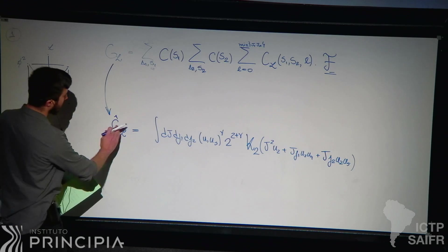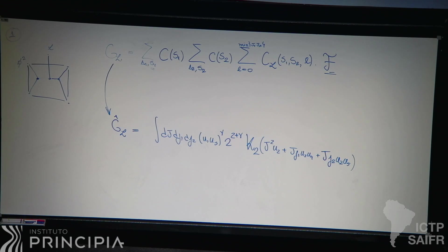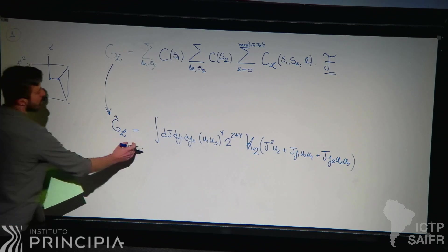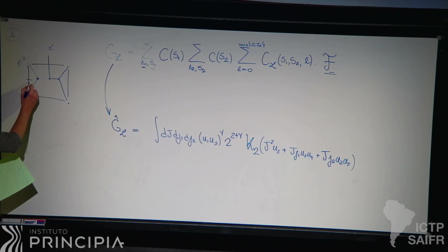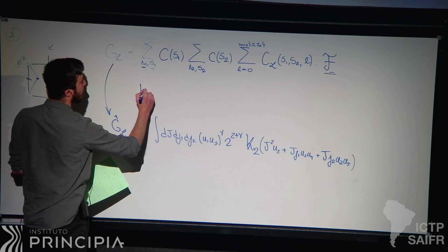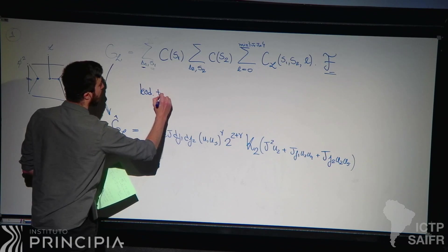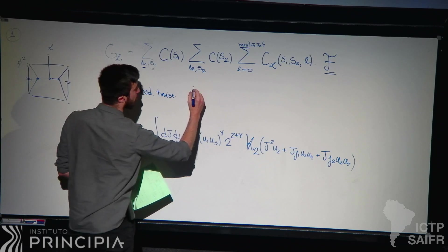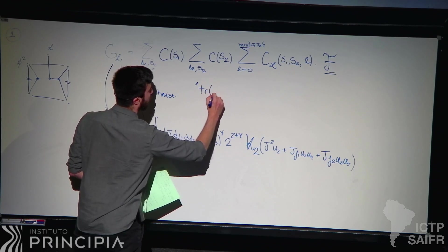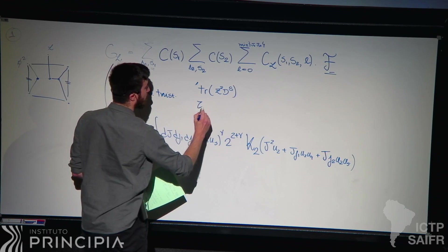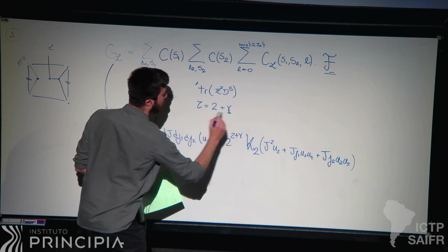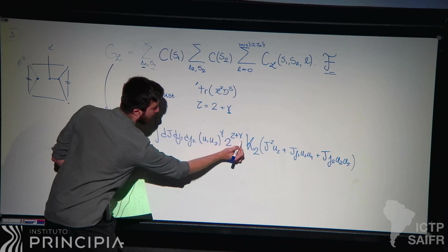The hats denote quantities normalized at tree level — everything with a hat is like one plus lambda and then loop expansions. There is no sum over Delta because when we make this line and this line become null-separated, we project into the leading twist channel — leading twist two — so these are the famous SL(2) operators: trace of Z squared with some spin. The twist of these operators is two plus the anomalous dimension, and this anomalous dimension is precisely what appears here.